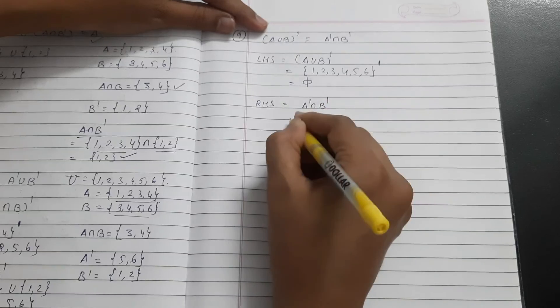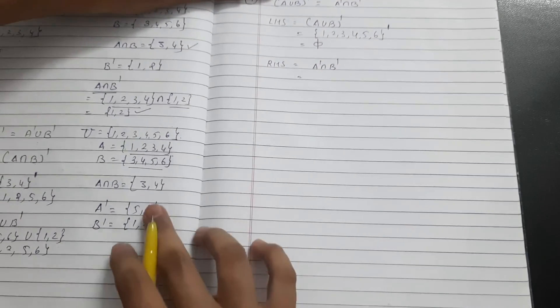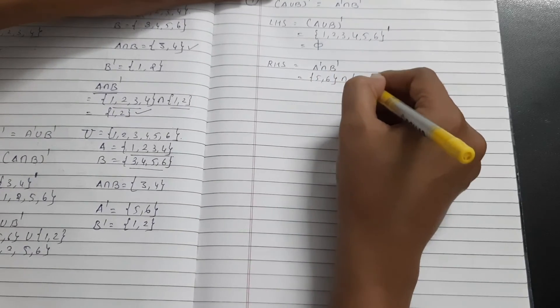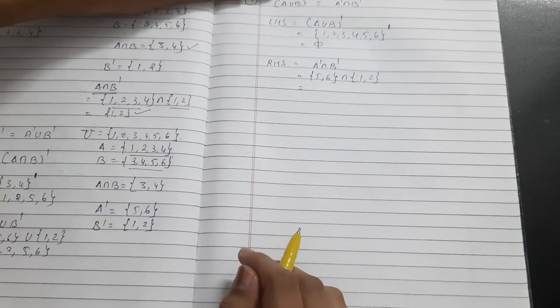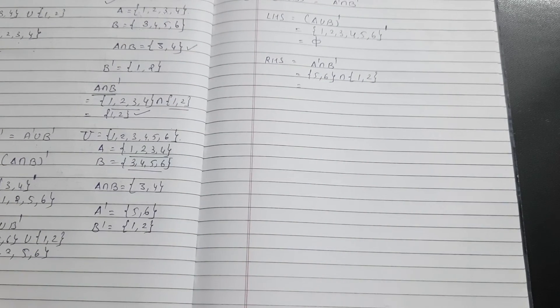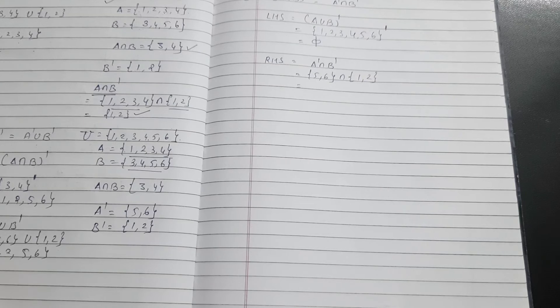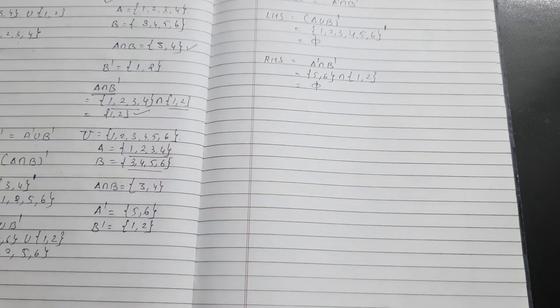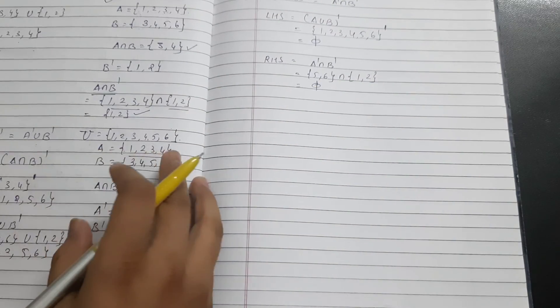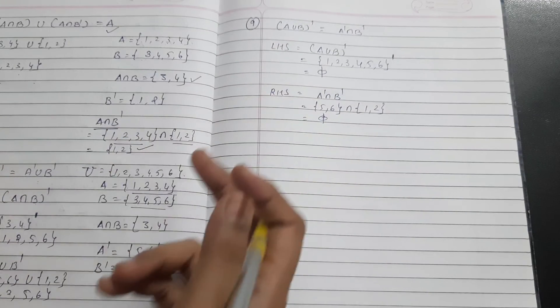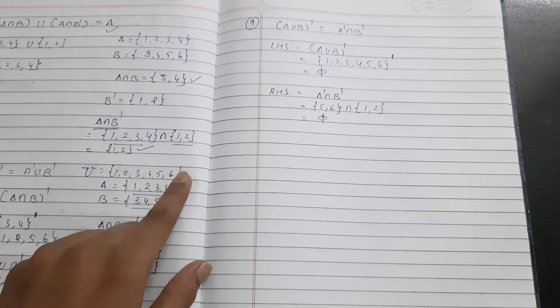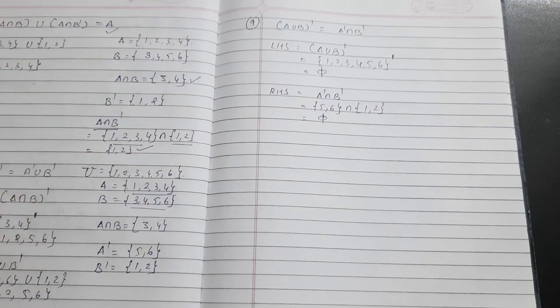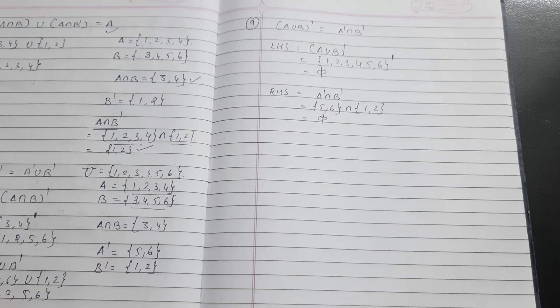Now moving to right side: A dash intersection B dash. A dash we already wrote {5, 6}. Intersection with B dash which is {1, 2}. Between both, intersection means common elements. But wait, no element is common, none match. That means empty or same result. Again it equals left side. When universal set has no additional elements, we get the same. That means left side and right side are the same. Thank you everyone.